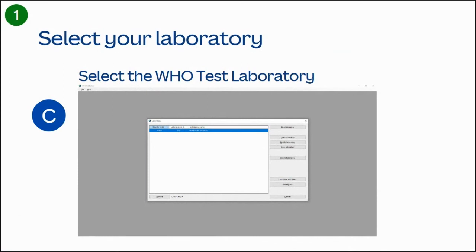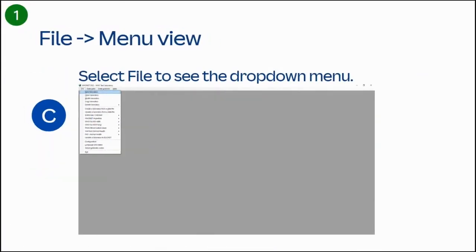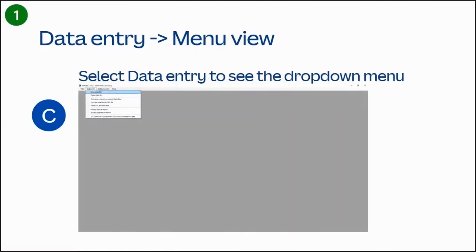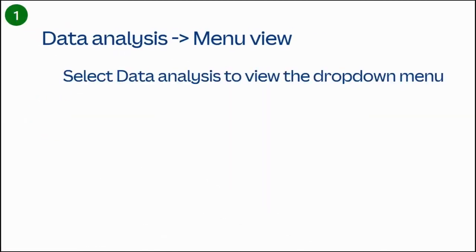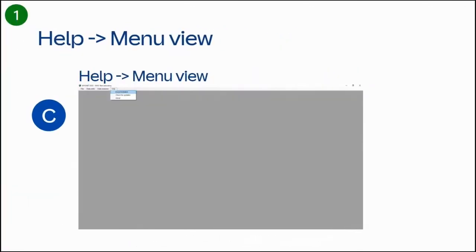Since this is your first time opening HUNET, it will ask you to select your laboratory. Select the WHO Test Laboratory and then click on the Open Laboratory button. From the HUNET home screen, the laboratory opens to the main menu options. You'll see at the top left corner: File, Data Entry, Data Analysis, and Help. Select each menu to see the respective drop-down options.